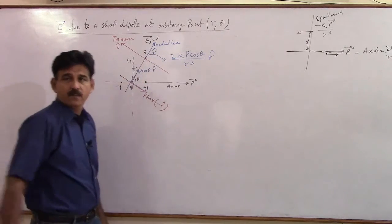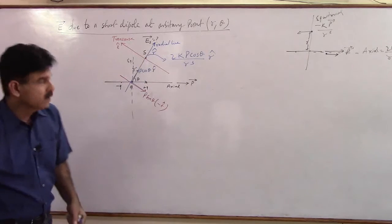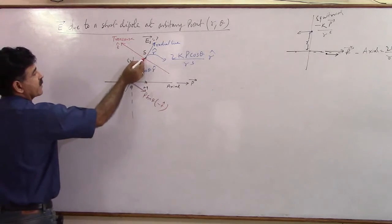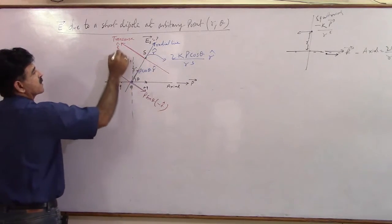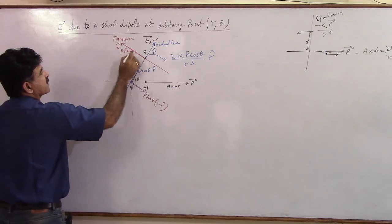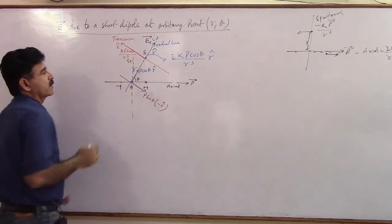So where will the field go? You will say along this, a field will be created which is K P sin theta divided by R cube.